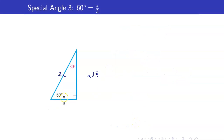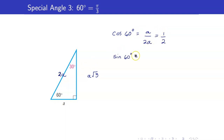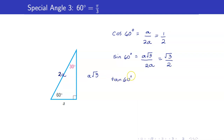For our last special angle, 60 degrees or pi over 3. Cosine of 60 is adjacent over hypotenuse, so that's a over 2a, which is 1 half. Sine of 60 degrees is opposite over hypotenuse, that is square root of 3 over 2. And tangent of 60 is opposite over adjacent, so that's square root of 3. The rest are just the reciprocals.